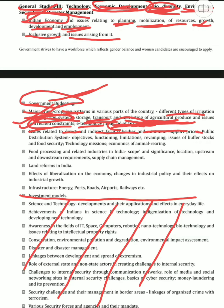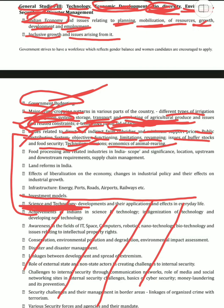Then we have the public distribution system, which is very important. There is now also an integrated public distribution system. We need to know its objectives, functioning, limitations, revamping, issues of buffer stocks, food security, and technology. Then there is the economics of animal rearing. Throughout this portion, you'll find technology mentioned everywhere — you have to link technology into every topic and cannot treat it as a separate subject to be addressed only in the science and technology section.